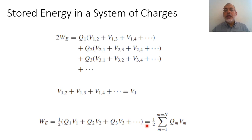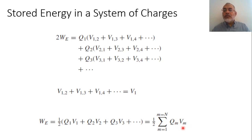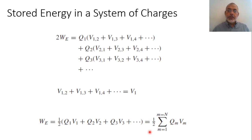In general, the stored energy W equals one-half times the summation of Qm multiplied by Vm, where m runs from 1 to N and N is the number of charges. Here Vm is the absolute potential at the point of charge m, which is effectively the summation of the potentials coming from all other charges to that point. This is the stored energy in a discrete system of charges.